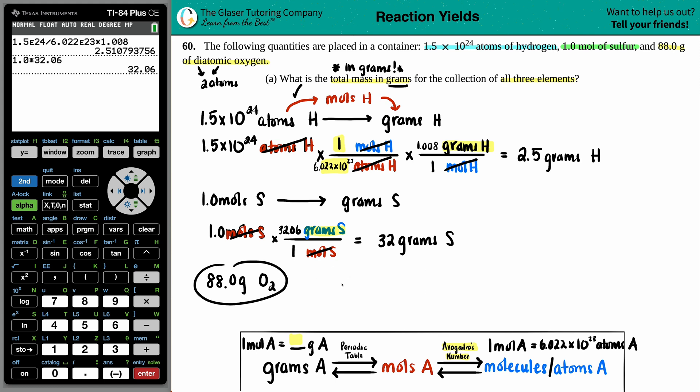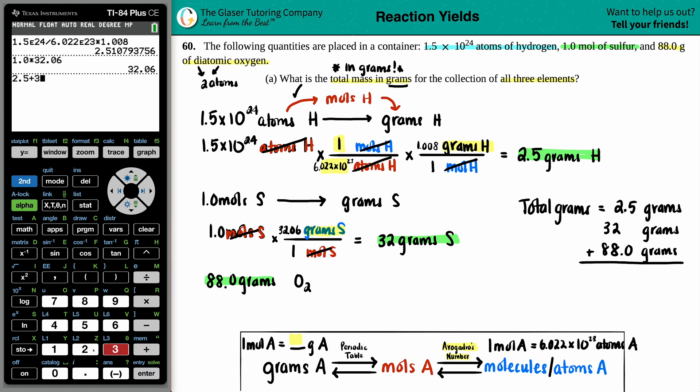Okay. And now we have 88.0 grams of oxygen. Maybe I'll just say grams. We don't have to do anything with that. So now we have the three total grams. 2.5 grams of H. We have 32 grams of sulfur. And we got 88 grams of oxygen. So if we want to find the total, the total grams, all we have to do is just add them up. So I'm going to add up the 2.5 grams. And maybe what I'll do is I'll put them over here. So I have 2.5 grams. I got the 32 grams. And I got the 88.0 grams. Now I align them this way because we're going to take in the correct significant digits.